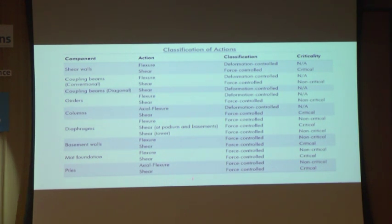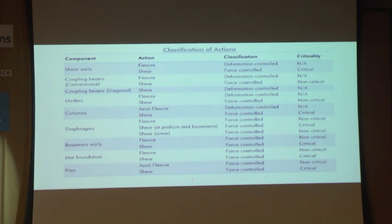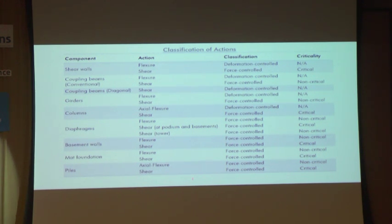These are the classifications of actions for structural components. For the nonlinear model, for the shear wall flexure, we consider it as a deformation-controlled action, but for shear wall shear, we consider it as a force-controlled action. If the shear wall shear failure is very critical, we consider it as a critical action, so when checking shear wall shear, we multiply by a 1.5 load factor. For coupling beams, flexure is considered deformation-controlled, and shear is typically a force-controlled action. For diagonal-reinforced coupling beams, the shear deformation is considered a deformation-controlled action.